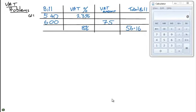Now, question one, we're given the bill amount is €540 and the VAT percentage is 23%. So I'll do question one here. What we're looking for is the VAT amount and the total bill. So, if we know the bill amount is 540, and we want to find 23% of that, the best way to do it is you just multiply it by 23 and divide by 100.